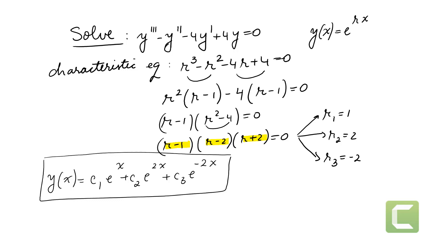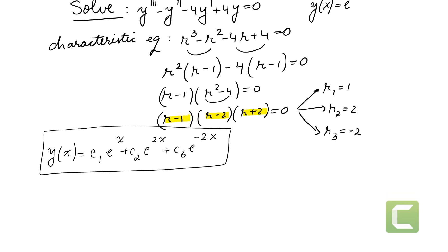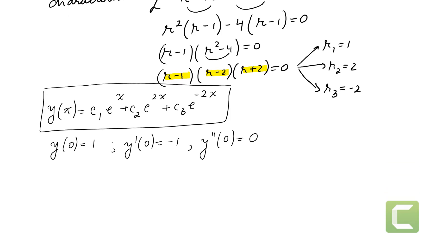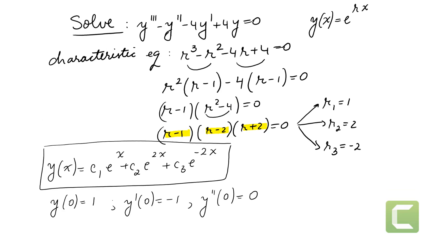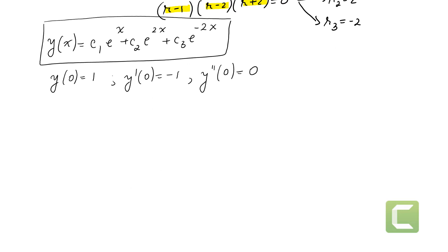Now let's solve this problem with some initial values. What if we have y(0) equals 1, y′(0) equals negative 1, and y″(0) equals 0? We need to find the constants c1, c2, and c3. Since it's a third-order differential equation, we expect to have three conditions: y(0), y′(0), and y″(0).